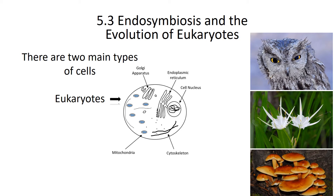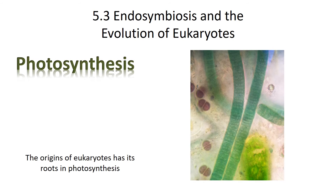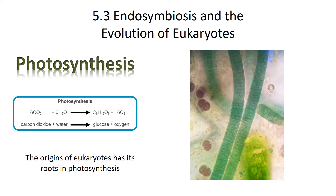So where exactly did the larger and more complex eukaryotes come from? How did they evolve? The origins of eukaryotes has its roots, actually, in photosynthesis. Photosynthesis was evolved by small cyanobacteria a long time ago, and it was a long time after the evolution of photosynthesis occurred that we got eukaryotic cells. Here's why.